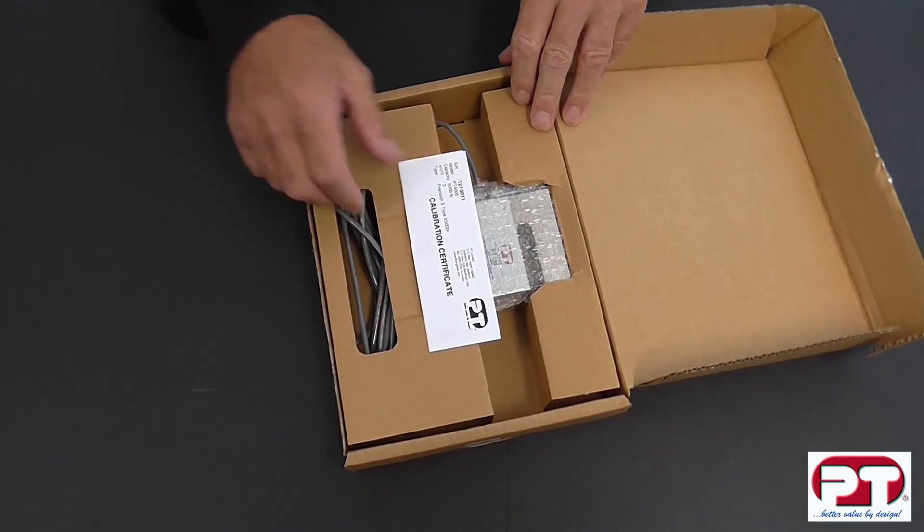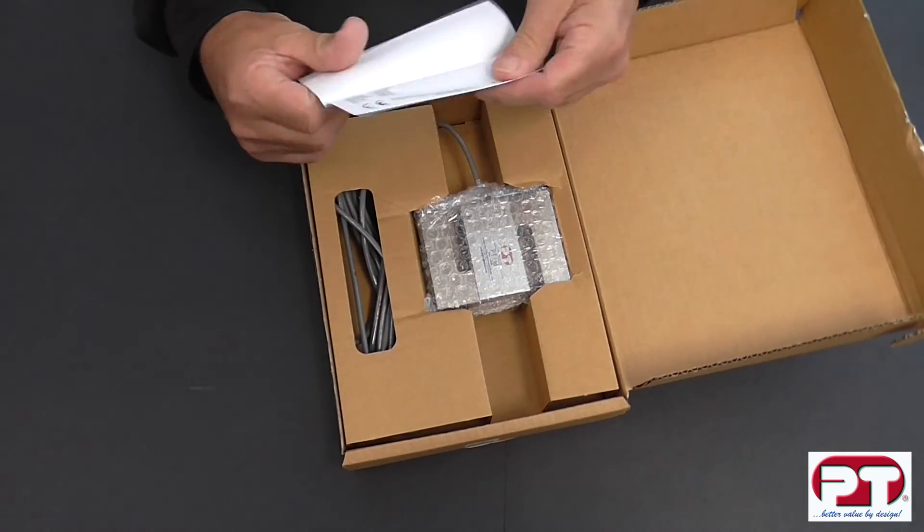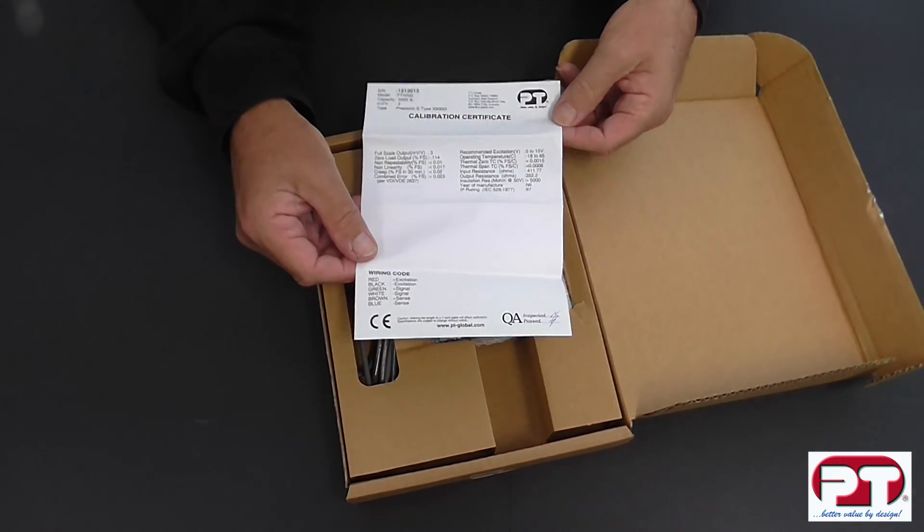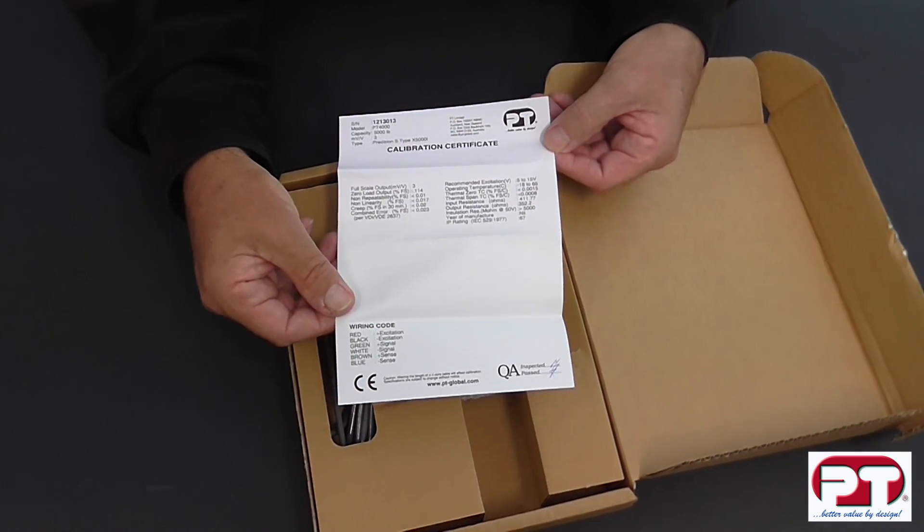Enclosed with the cell you'll find a calibration certificate. This certificate shows important information useful for installation and calibration, therefore it should not be discarded.